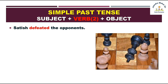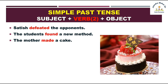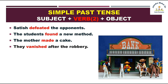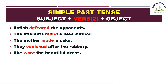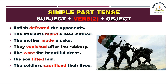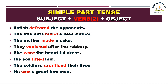Simple past tense ke sentences: Satish defeated his opponents. Students found a new method. The mother made a cake. They vanished after the robbery. She wore the beautiful dress. His son lifted him. The soldiers sacrificed their lives. He was a great batsman. We had a huge bungalow. Jo red color ke words hain woh verb ke second forms hain — jahan ED laga woh regular verbs, jahan ED nahi laga woh irregular verbs.